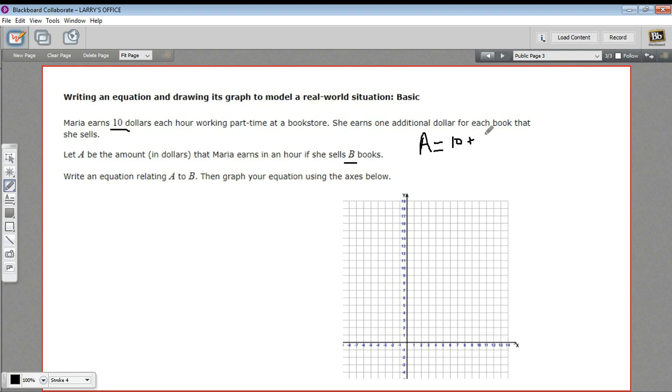And then we're going to have plus $1 times B. But 1 times B is just B. So this can really be written as 10 plus B.